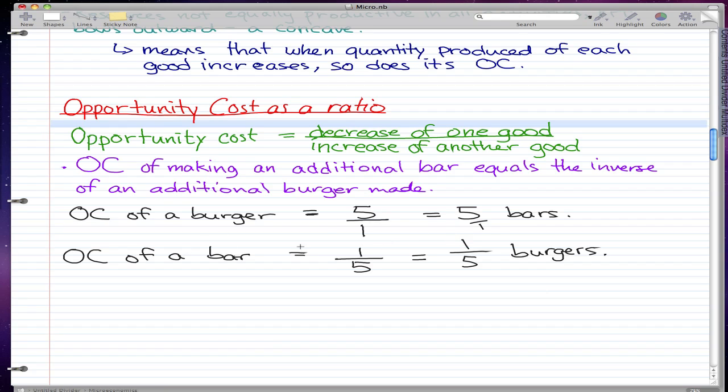So the opportunity cost of bar is simply the inverse of the burger, which where we flipped five and one. So one is on top and five is on bottom. And that would be the concept of opportunity cost as a ratio.